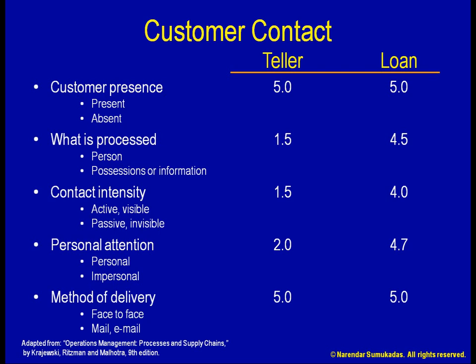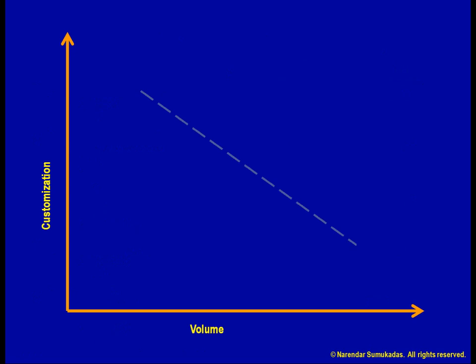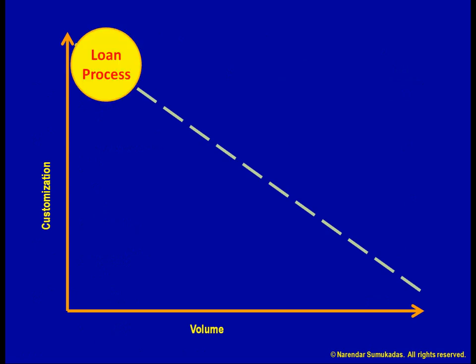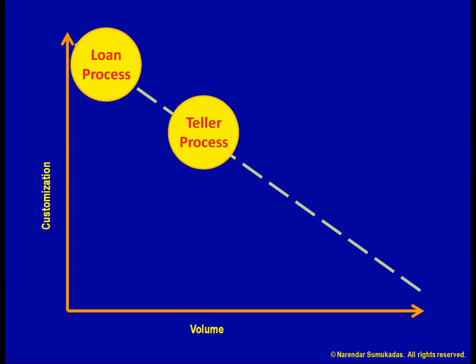The total for the teller process works out to 15.0. The total for the loan process works out to 23.2. These numbers are on a scale of 5 to 25 possible points. Going back to our diagram, we cannot simply treat both these processes as front office processes and put them on the same spot on the diagonal. Rather, according to our analysis, the teller process must fall much lower down the diagonal.